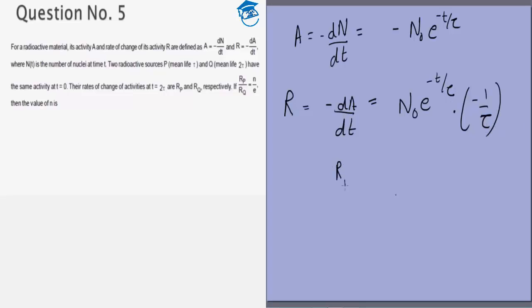The equation will be Rp by Rq equals minus n0 for the first one it is tau, so e to the power minus 2 tau by tau because we want it at time t equals 2 tau, times 1 by tau, divided by minus n0 times e to the power minus 2 tau by 2 tau times 1 by 2 tau.